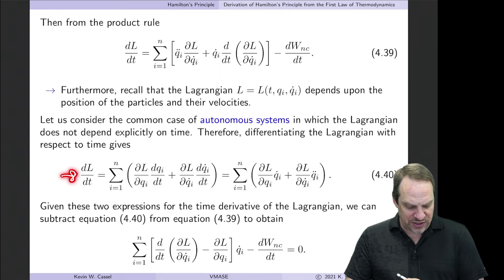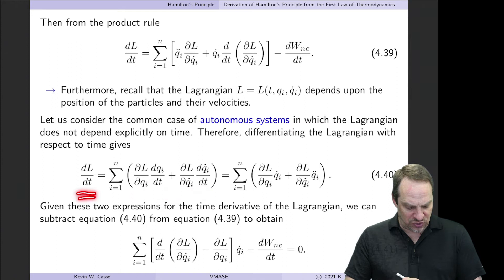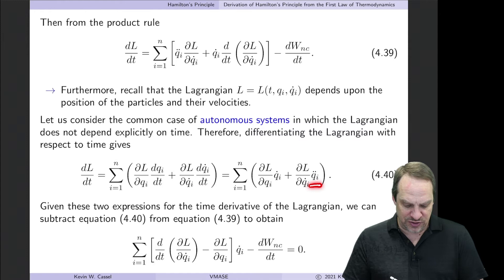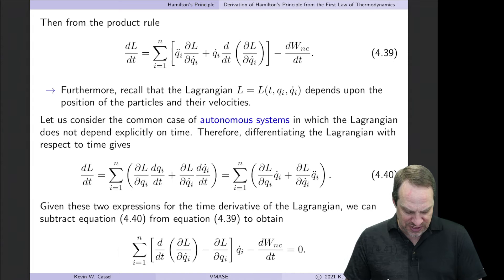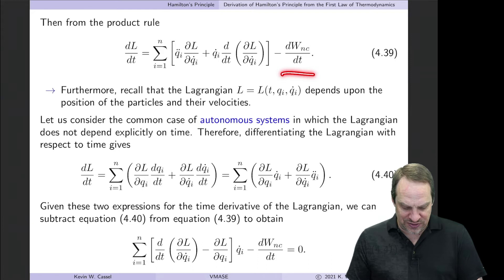Applying the chain rule to the Lagrangian for an autonomous system: dL/dt equals ∂L/∂qᵢ times dqᵢ/dt plus ∂L/∂q̇ᵢ times dq̇ᵢ/dt, which simplifies to ∂L/∂qᵢ times q̇ᵢ plus ∂L/∂q̇ᵢ times q̈ᵢ. We now have two expressions for dL/dt. Subtracting them, the dL/dt cancels, the q̈ᵢ term also cancels, and we're left with the sum of [d/dt(∂L/∂q̇ᵢ) minus ∂L/∂qᵢ] times q̇ᵢ, minus dW_NC/dt, equal to zero.